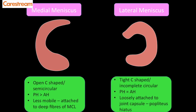The medial meniscus has an open C-shaped or semicircular appearance. Importantly, the posterior horn of the medial meniscus is larger than the anterior horn — nearly double its size. Whenever there is a displaced meniscal flap, the posterior horn will appear attenuated or smaller. If the posterior horn appears the same size as the anterior horn, you know there is a tear, because the posterior horn of the medial meniscus must be nearly double the size of the anterior horn. The medial meniscus is also less mobile because it is attached to the deep fibers of the medial collateral ligament, making it more prone to tears.